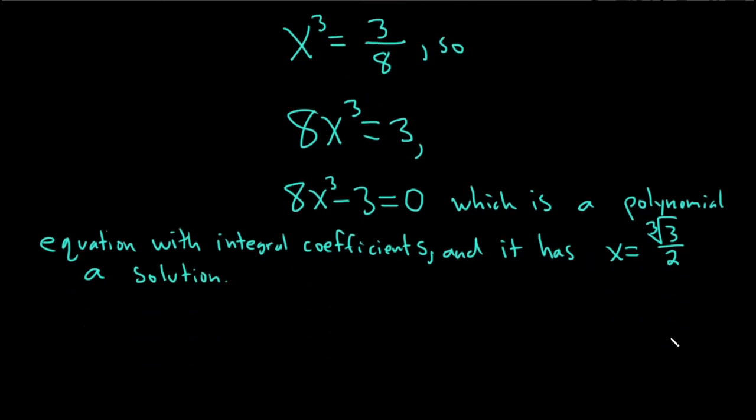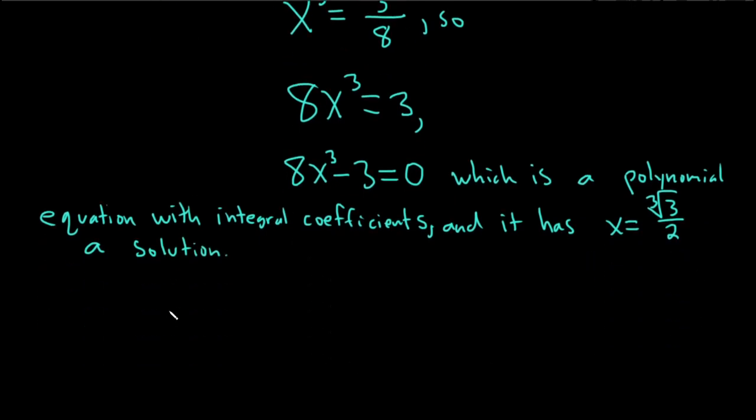This is precisely what it means for our number to be algebraic. So this means the cube root of 3 over 2 is an algebraic number.